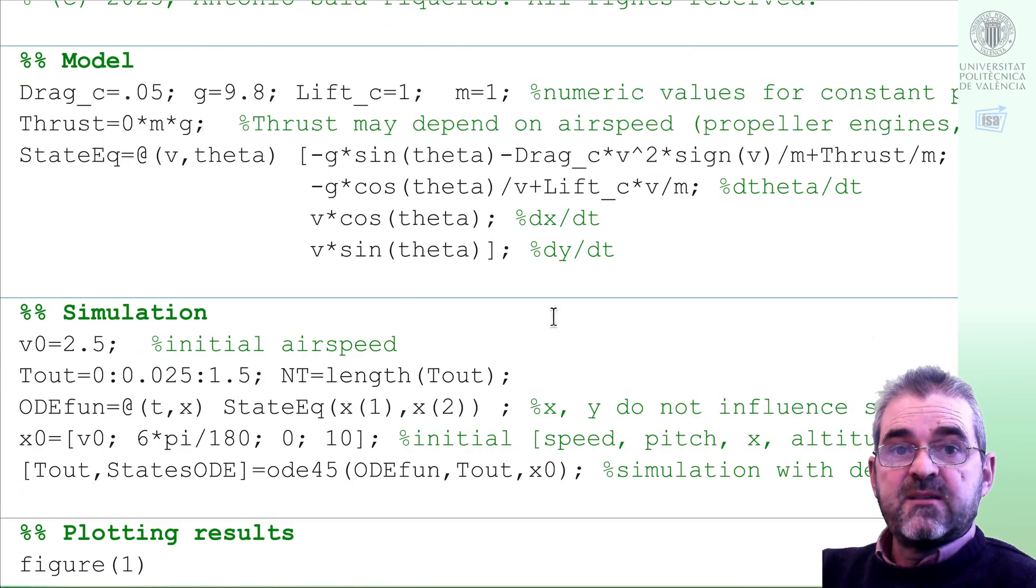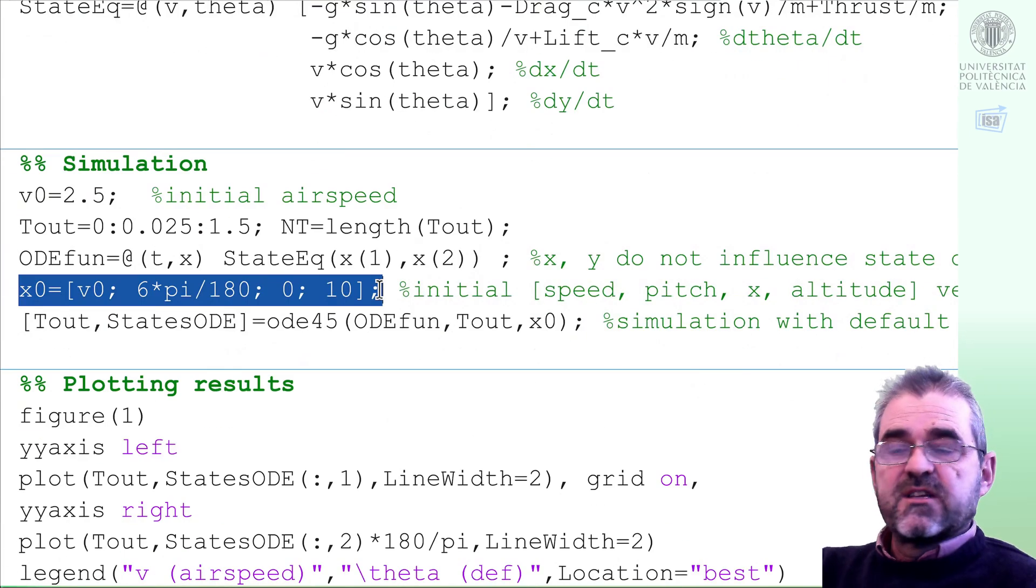How can we simulate that model? Well, we need to set some initial conditions for the numerical differential equation solver. Initial speed, v0. Initial pitch, theta, 6 degrees. Initial longitudinal position, x0, set to zero in here. And initial altitude, set to 10 units.